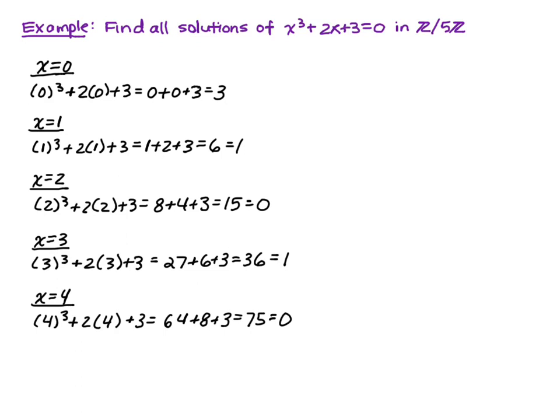So it looks like we have two solutions to the equation. So 2 and 4 are solutions to x cubed plus 2x plus 3 in Z mod 5Z.